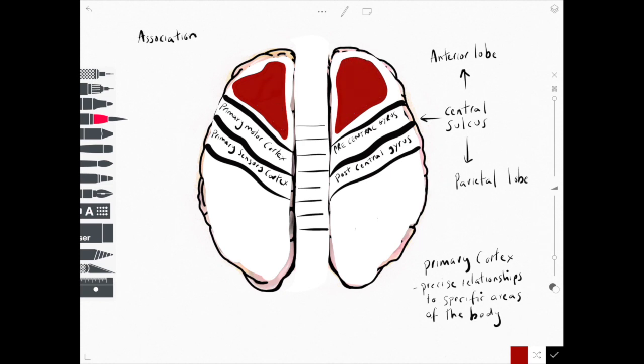Supporting each of the primary cortices is a larger less well-defined area of cortex. This area in red that sits in the anterior lobe is involved in supporting the primary motor cortex, an area known as the association motor cortex, and it's involved in the planning of movement before the primary motor cortex executes it.